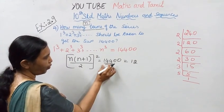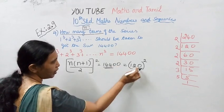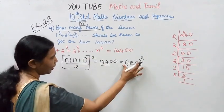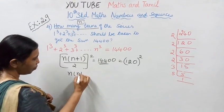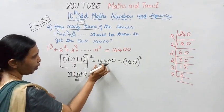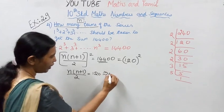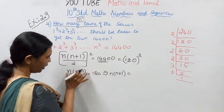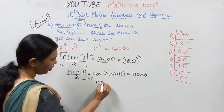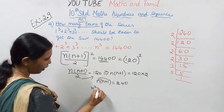So [n(n+1)/2]² = (120)². Taking square root on both sides: n(n+1)/2 = 120. Multiply both sides by 2: n(n+1) = 240.